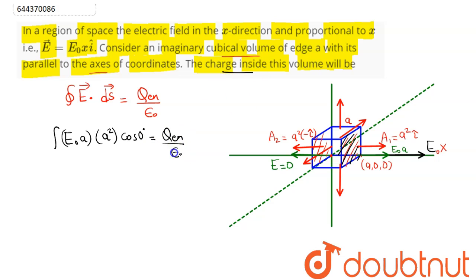This is all constant value, so Q enclosed value will be equal to E0 into A cube into epsilon 0, as cos 0 is 1. So this is the total charge enclosed by this cubical volume, which is our answer.